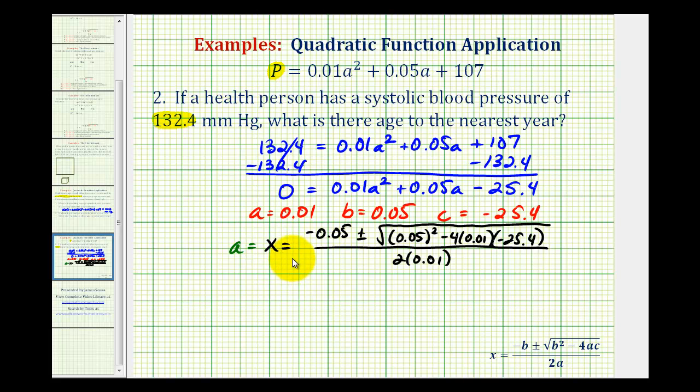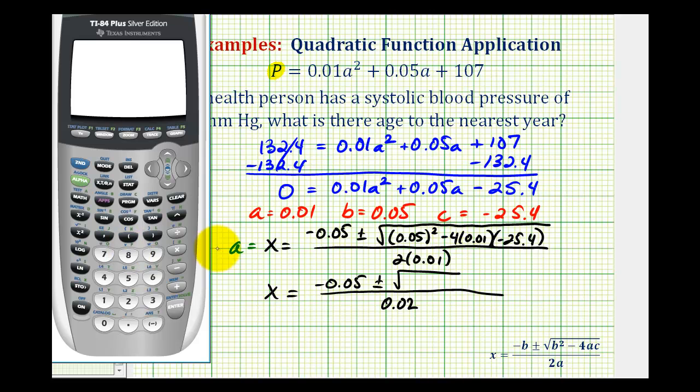We'll have X equals negative 0.05 plus or minus the square root of, now we'll determine the discriminant here, and this would be divided by two times 0.01 or 0.02. So our discriminant will be 0.05 squared minus 4 times A, which is 0.01, times C, which is negative 25.4. So we have 1.0185.